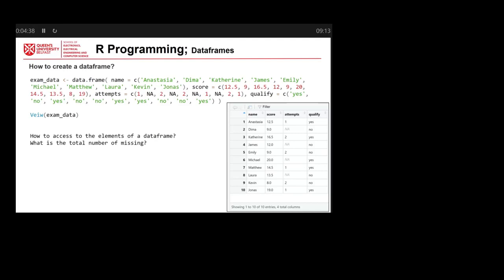We define these four columns: name, which is a vector; score, again a vector of numeric values; attempts; and qualify — then close the brackets. By using View(exam_data) you can view this data frame in your R environment.